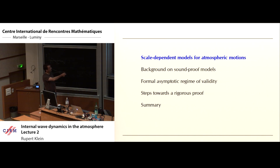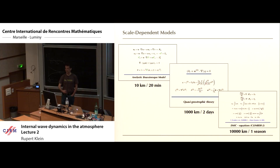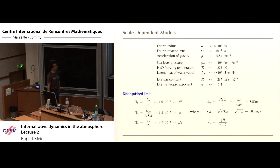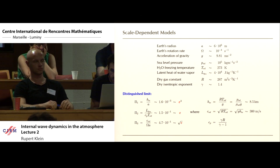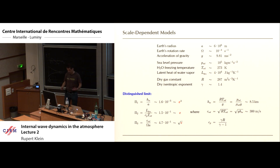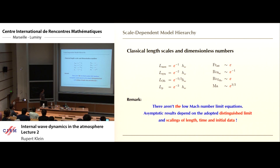So recap: scale-dependent models for atmospheric motions. I showed you these pictures yesterday representing more or less typical scales in time and space of the atmosphere. We knew that there are very different equation sets behind them that represent particular phenomena. I told you how to approach the derivation of these equation sets systematically by first finding out what are the universal characteristics of the atmosphere that we can boil down into three dimensionless numbers that are the real characteristics that are independent of each other. Then we found out that at least two of them are small and one is reasonably small, which gave rise to what I called the distinguished limit, a coupled limit in parameter space. And once I have that small epsilon I can non-dimensionalize my equations.